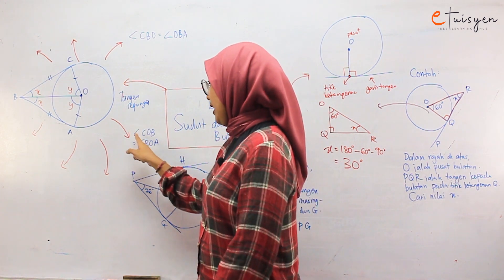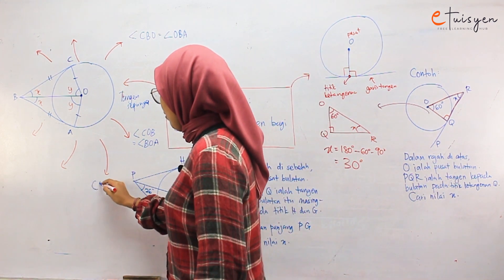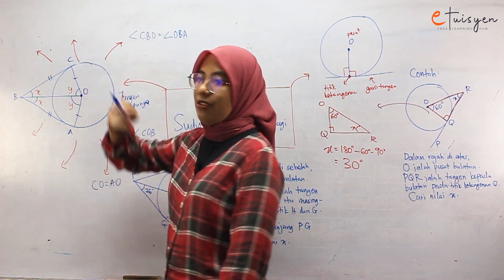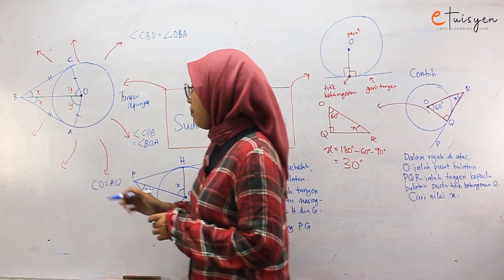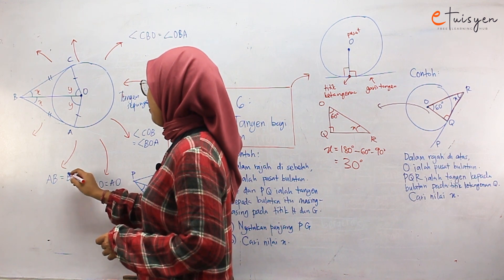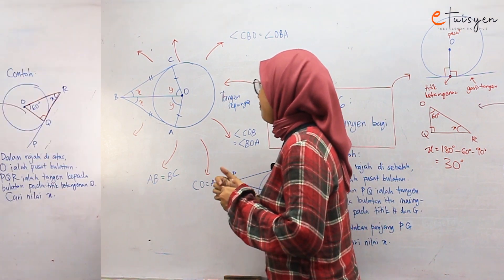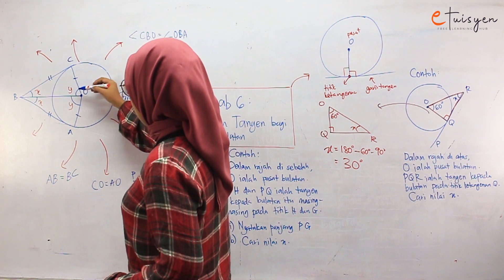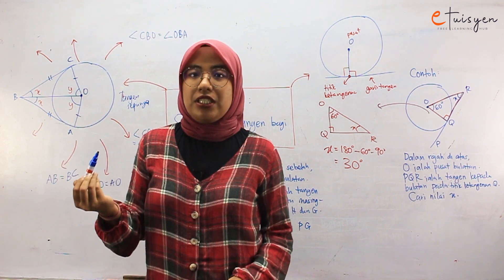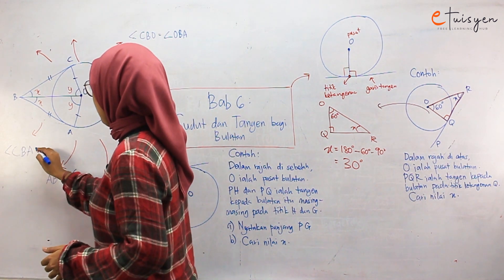Sudut COB — sini Y — sama dengan BOA. Sekali lagi, sudut COB sama dengan sudut BOA. So I tulis kat sini: sudut COB sama dengan sudut BOA. Basically ni samalah — itu yang kedua. So pastikan apa yang kita nak — sudut apa yang kita nak tu dia berada di tengah. Seterusnya kita ada panjang CO sama dengan panjang AO — so sini AO sama panjang dia dengan CO.